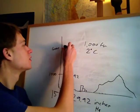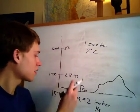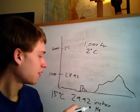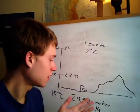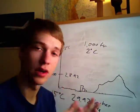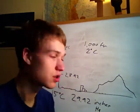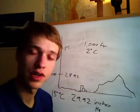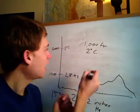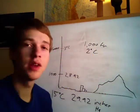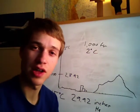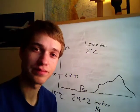So there you go — in standard conditions, atmospheric pressure varies by about one inch of mercury per thousand feet, and temperature changes by 2 degrees Celsius per thousand feet.